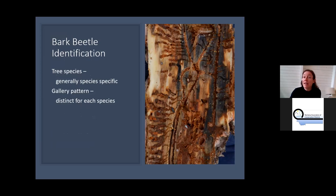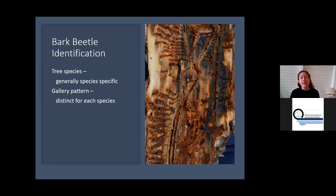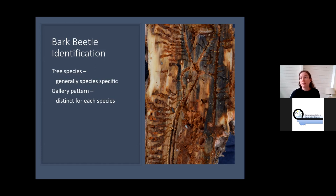Bark beetles are not actually that hard to identify. They all look very similar to the naked eye, but there are telltale signs. The first step is knowing what species of tree you're dealing with — if you have Doug fir, the beetle is likely Doug fir beetle. Once you peel away the bark with a hatchet, you'll see distinct galleries underneath. Each species makes a very particular pattern you can match to identification books or online resources.